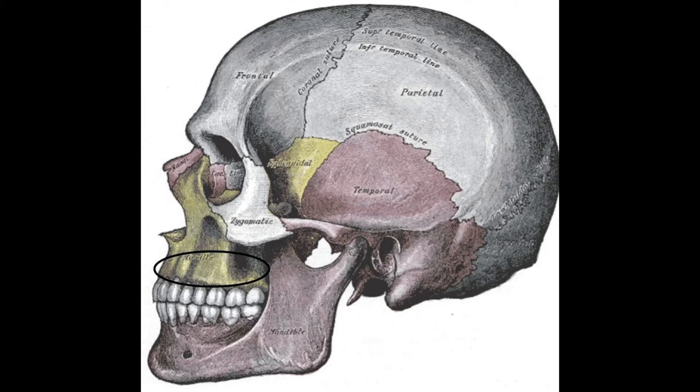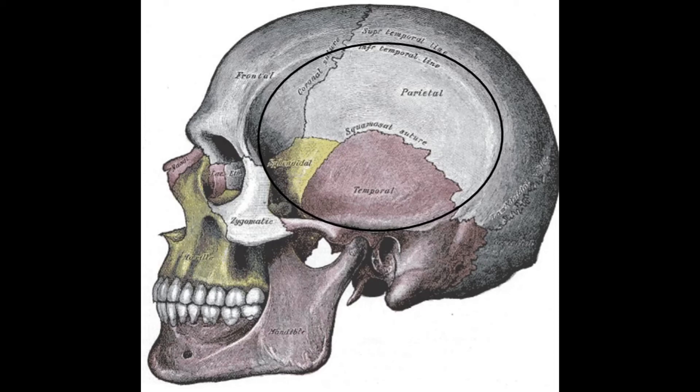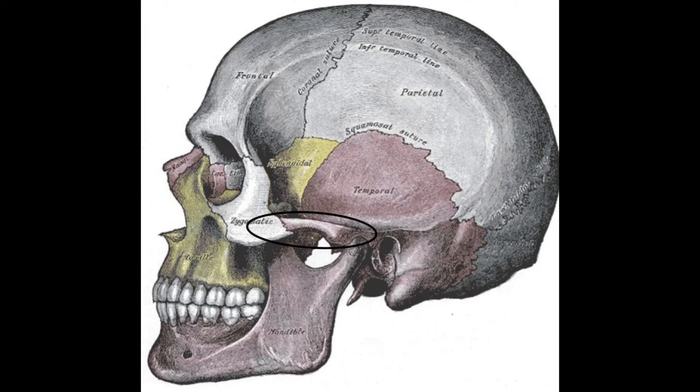This is a lateral view of the temporal fossa. We can clearly see the four bones that make up the fossa: superiorly and anteriorly we have part of the frontal bone; superiorly and posteriorly we have parts of the parietal bone; inferiorly we have the temporal bone; and anterior-inferiorly we have the sphenoid bone.